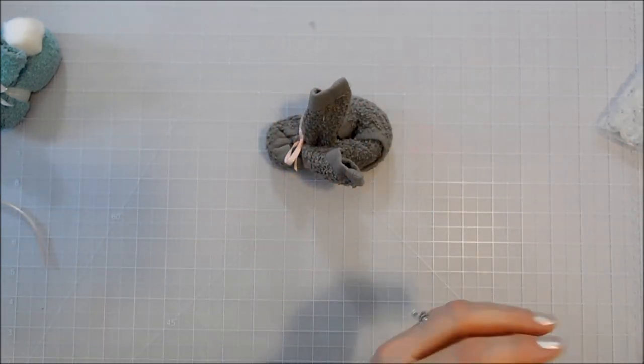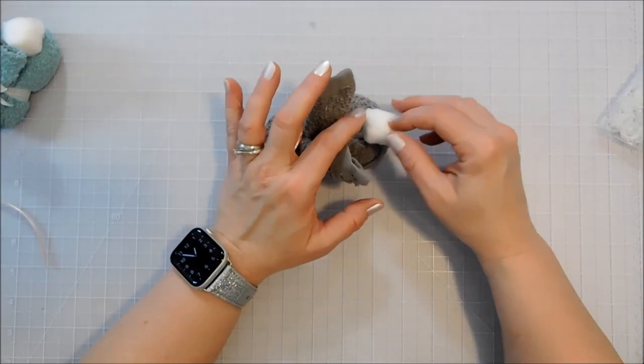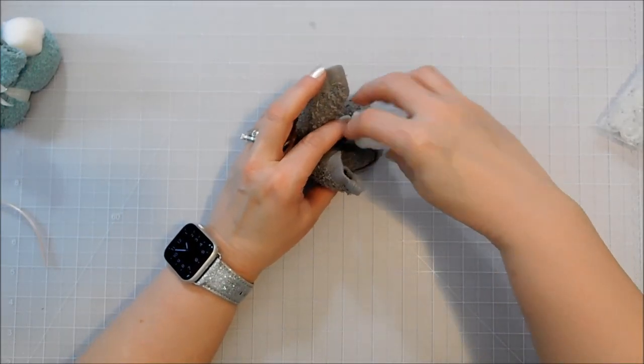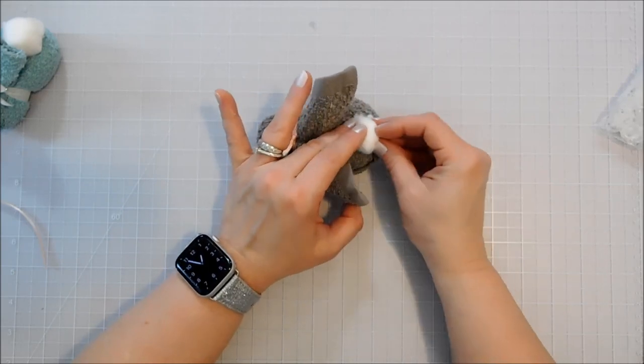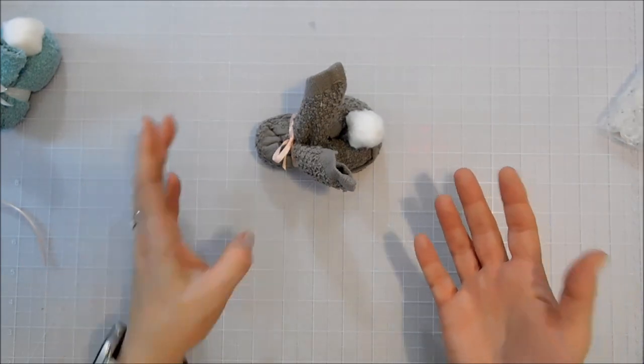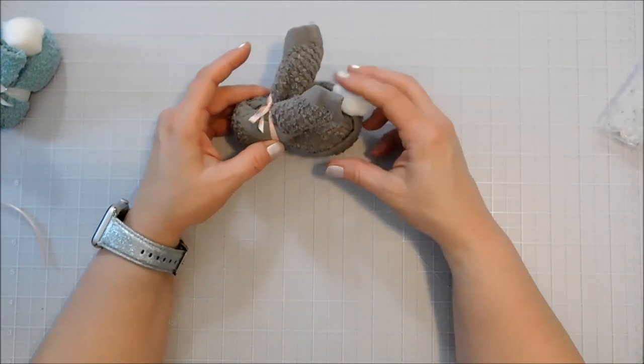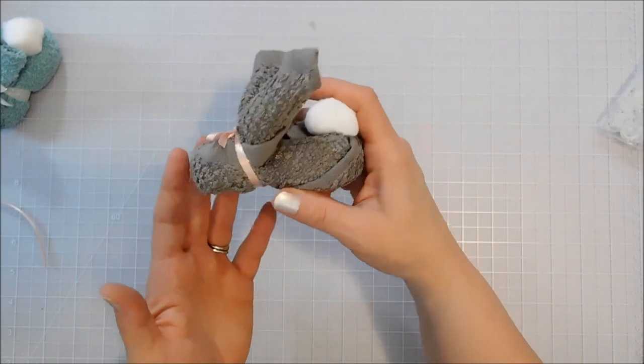And then just add a little cotton tail on there. You can kind of mash it down. I'm not going to attach it in any way because I want this to just be a guest washcloth in my bathroom so that they can just untie that and be able to use the washcloth.